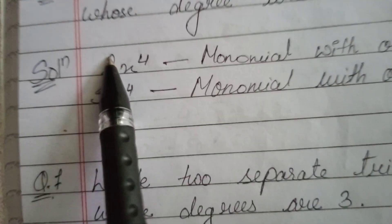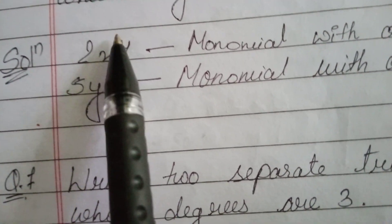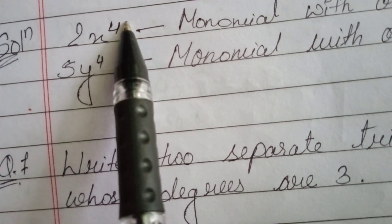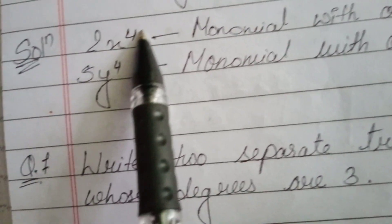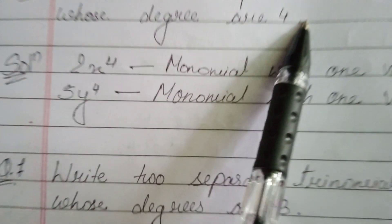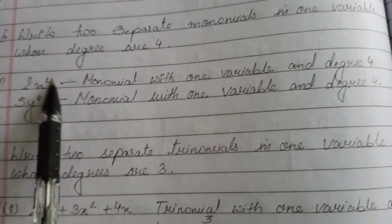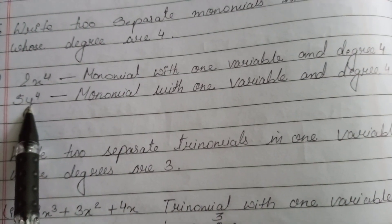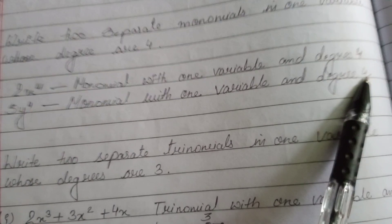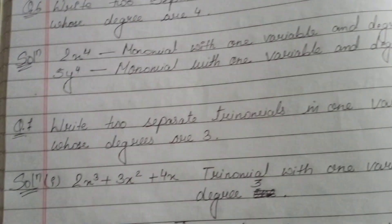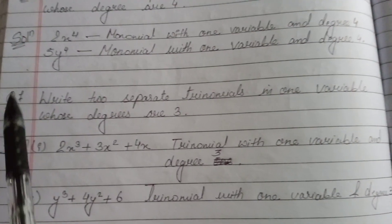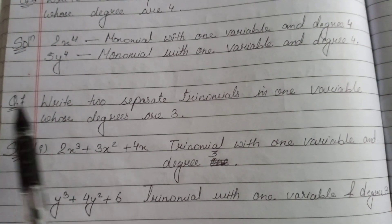You can write any number as the coefficient, such as 6x to the power 4 or 9x to the power 4 — any number, but the power must be 4 because the degree of 4 is specified. It is a monomial because only one term is there with one variable x, and degree is 4. Similarly, y is one variable with degree 4.